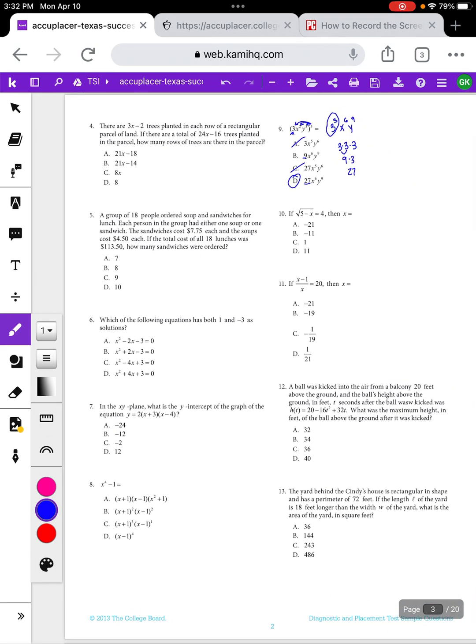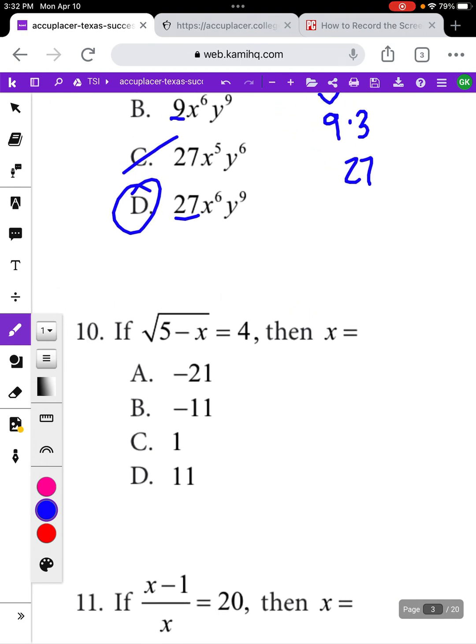The last thing I want to look at is a question like number 10, where you're asked to solve an equation for a value. This one says if the square root of 5 minus x equals 4, then x equals, and then we're meant to fill in the blank from there with one of the answer choices. Trying to remember the rules for solving an equation, especially when it becomes more complicated, if there's something like a square root or a fraction or parentheses, it can be kind of challenging because you have to be really careful with the order that you do things in. But because this is a multiple choice test, a lot of times it will actually be easier to start by plugging in each answer choice until you find one that works.